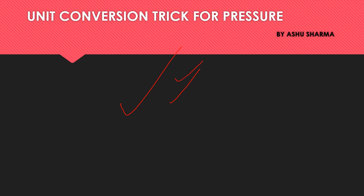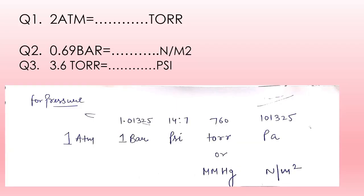Let's suppose we have to convert 2 atm into torr, 0.69 bar to newton per meter square, and 3.6 torr into psi. I'm giving you the simplest trick — by using this trick you will be able to solve such numerical problems in a few seconds.